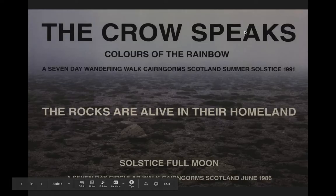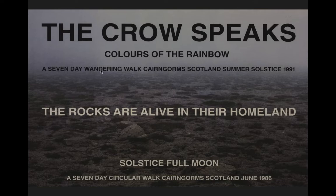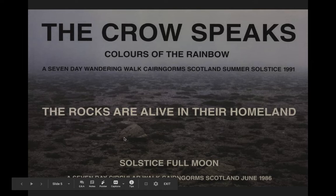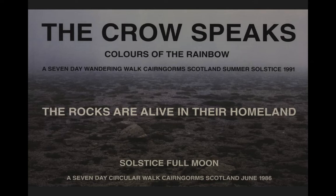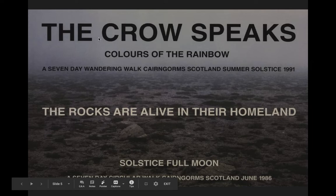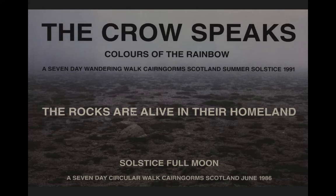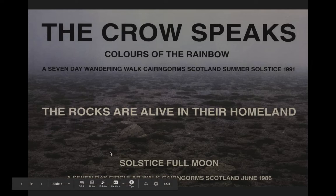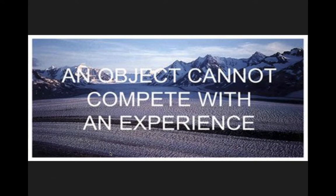This one says 'The Crow Speaks, Colors of the Rainbow, A Seven Day Wandering Walk of Cairngorm Scotland, Summer Solstice 1991. The Rocks Are Alive in Their Homeland. Solstice Full Moon, A Seven Day Circular Walk, Cairngorm Scotland, June 1986.' You can see how he changes the text size and colors to emphasize different parts. He also changes the spacing — some lines are grouped together and some are off by themselves. Think about how you might want to include text in your own artwork.